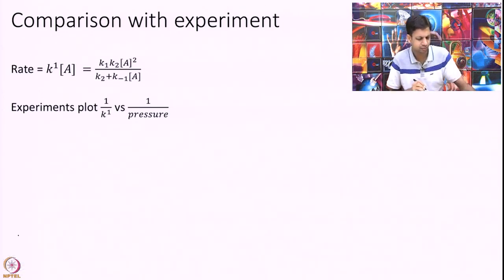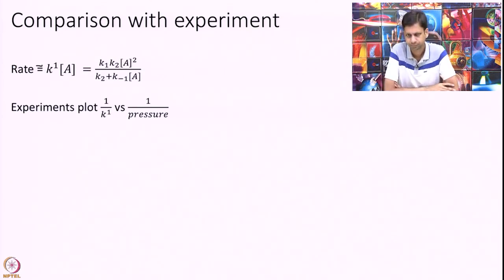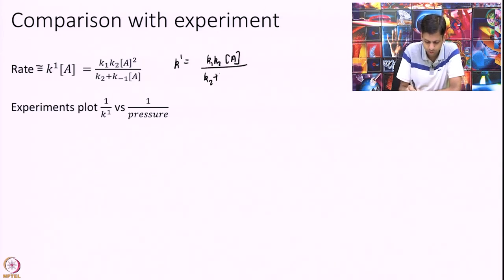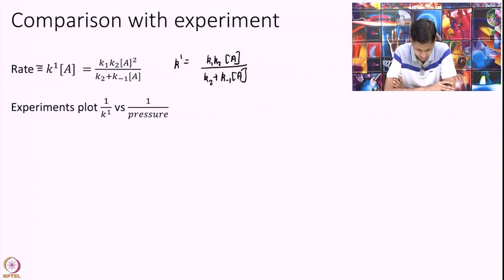Finally, I can express rate as some K into concentration of A. Let me define it this way only. It is not elementary, but I can always define K1 as this. I can calculate this K1 as K1K2[A] over K2 plus K-1[A]. I have divided by capital A on both sides. Clearly this K1 is not independent of concentration. It is not a number at a given temperature. It depends on concentration of A, clearly showing that A going to B is not elementary in this model.